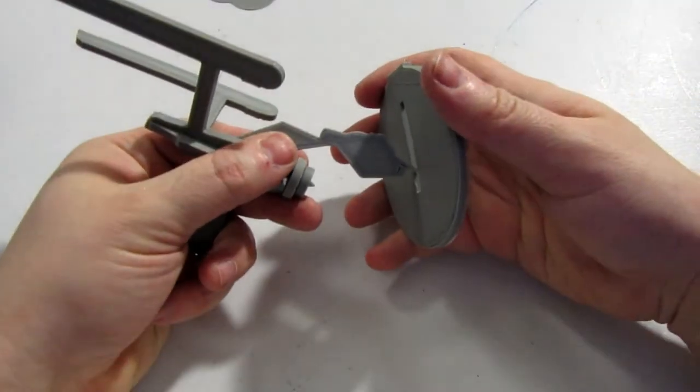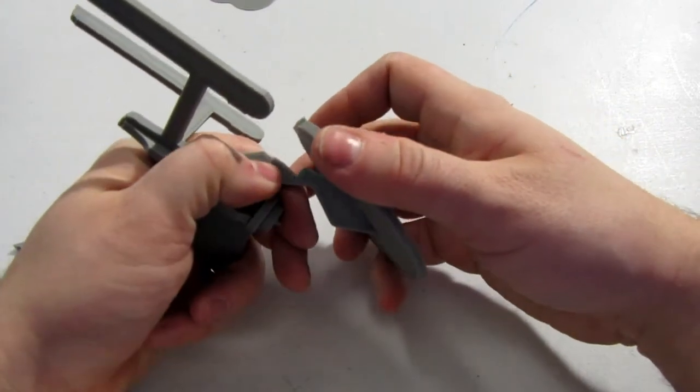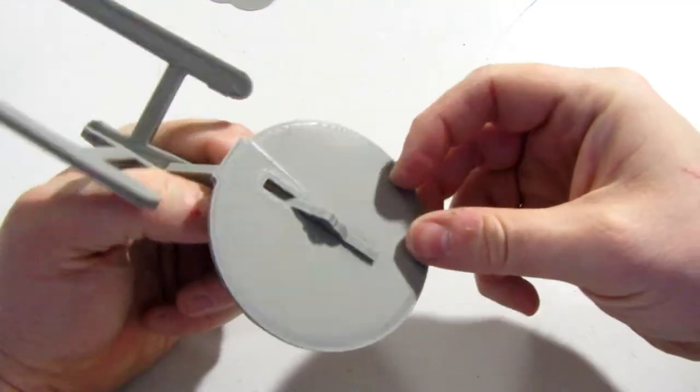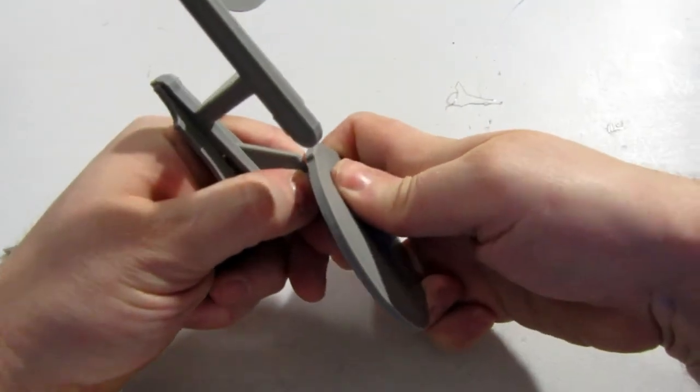Just like that. Then all we have to do is get this saucer section on, which should just be feeding the front part in here like that, and then push back.